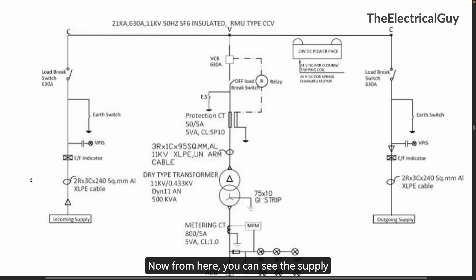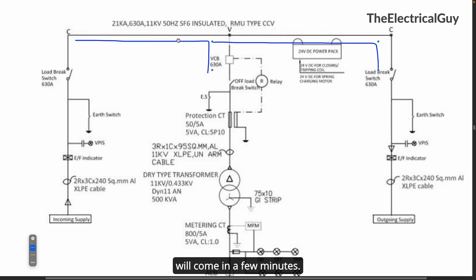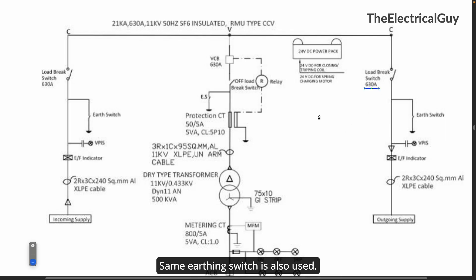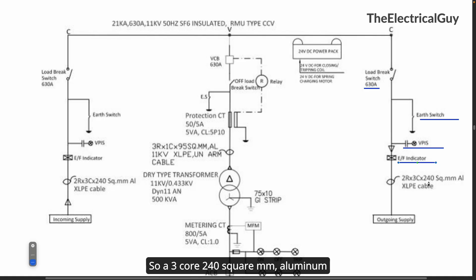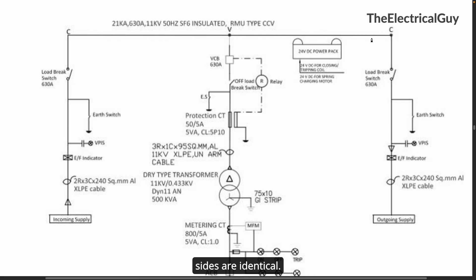This is our incoming supply. From here the supply goes to the circuit breaker end and also to the outgoing side. On the outgoing side, we have the same setup: a load brake switch of 630A, the same earthing switch, the VPIS system, an earth fault indicator, and the same cable — 3-core 240 square mm aluminum XLPE — which then goes to a different system or ring main unit depending on the application. So the incoming and outgoing sides are identical.